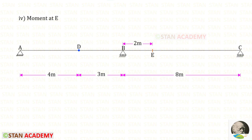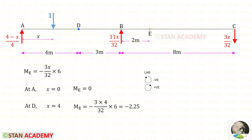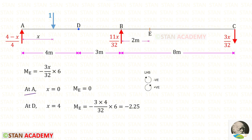Now, we are going to draw the ILD for the moment at E. First, let us keep the unit load between A and D. To find the moment at point E, we can use the left-hand side rule. RC is acting in the anticlockwise direction, so it will be negative, and the distance is 8 minus 2, which is 6. At A, X will be 0, so Me will be 0. At D, X will be 4, so Me will be minus 2.25.